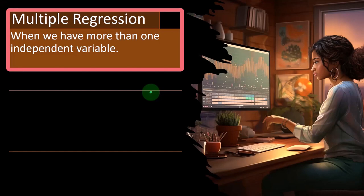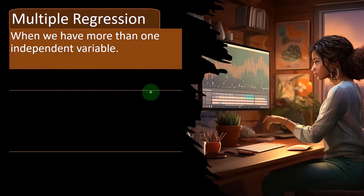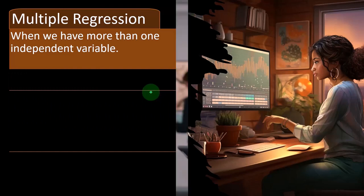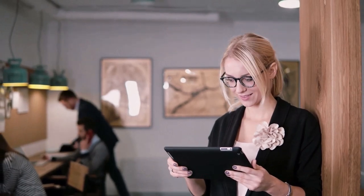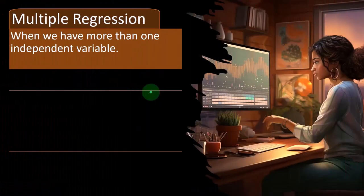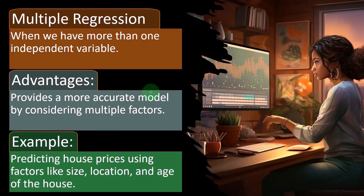So then multiple regression. So we can get more complicated in this, of course, when we have more than one independent variable. So we might come to the conclusion that, hey, look, looking at just these two factors, it's a more complex system than that. You can't come to the proper conclusion just looking at those two things in some systems. So then we might have multiple regression advantages: provides a more accurate model by considering multiple factors.